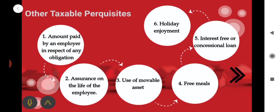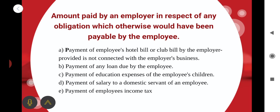The next topic: other taxable perquisites. What are the other taxable perquisites? First, amount paid by an employer in respect of any obligation. Second, assurance on the life of employees. Third, use of mobile assets. Next, free meals, interest-free or occasional loans, holiday enjoyment, etc. Regarding amount paid by an employer in respect of any obligation: this includes payment of an employee's hotel bill or club bill by the employer, provided it is not connected with the employee's business; payment of any loan due by the employee; payment of education expenses of the employee's children; payment of salary to a domestic servant of an employee; and payment of an employee's income tax. All these amounts paid by an employer in respect of any obligation that would otherwise have been payable by the employee are taxable.